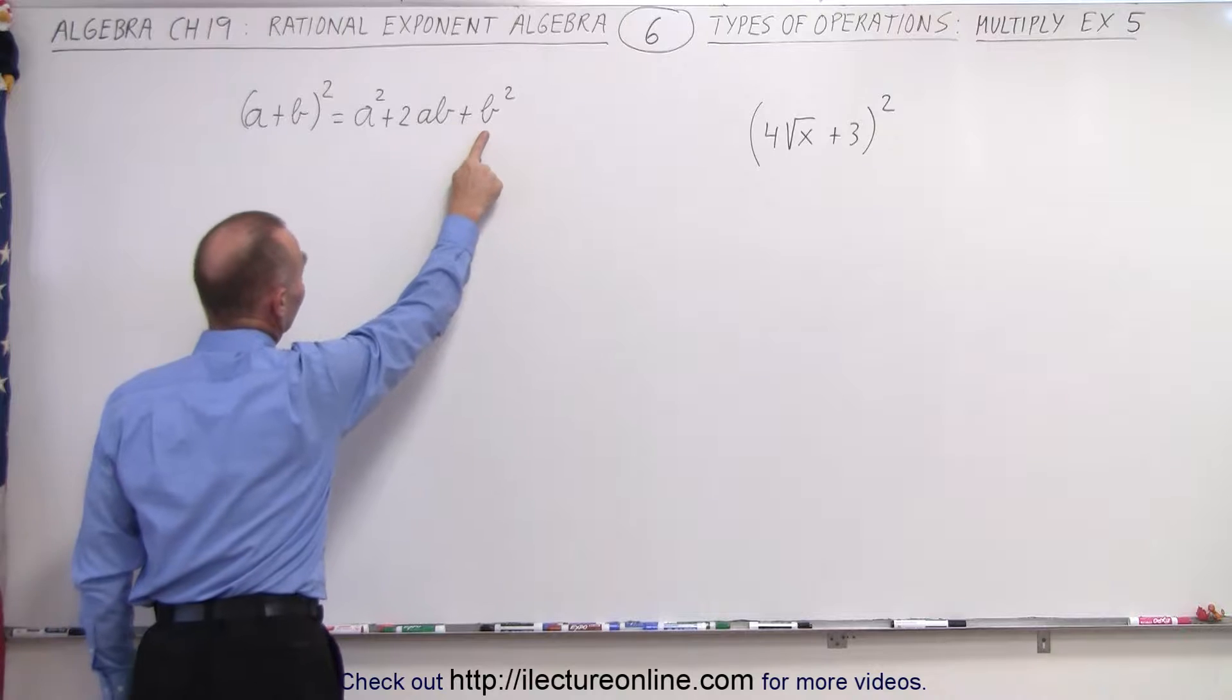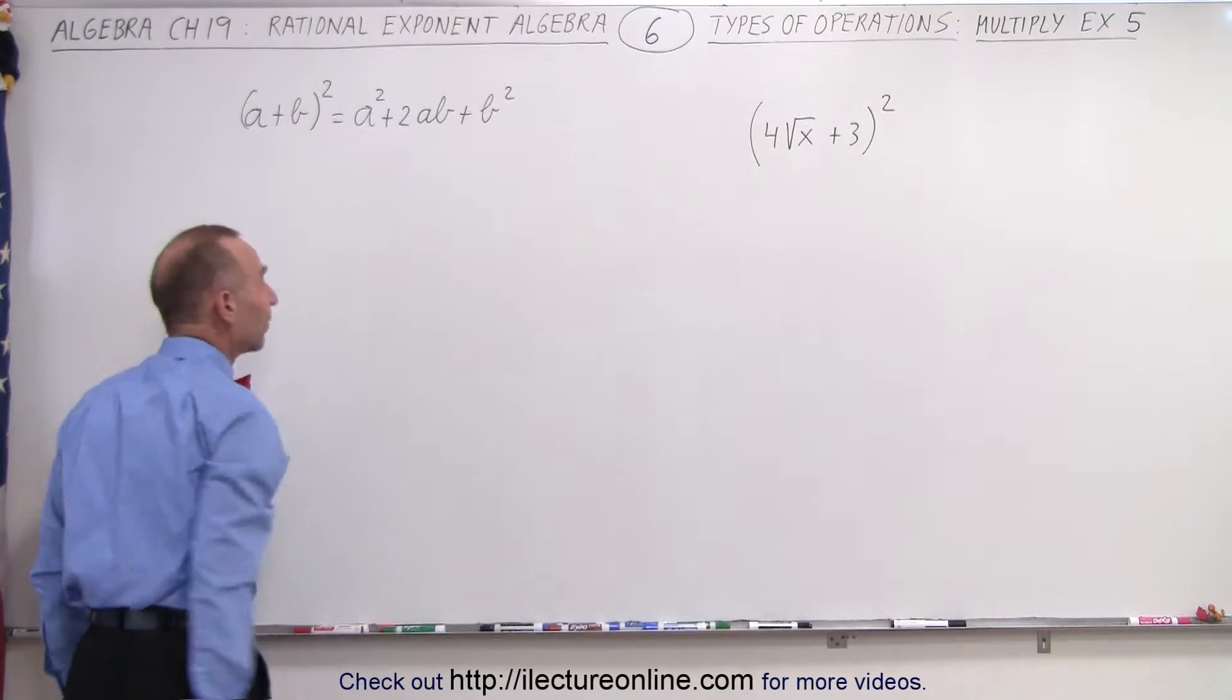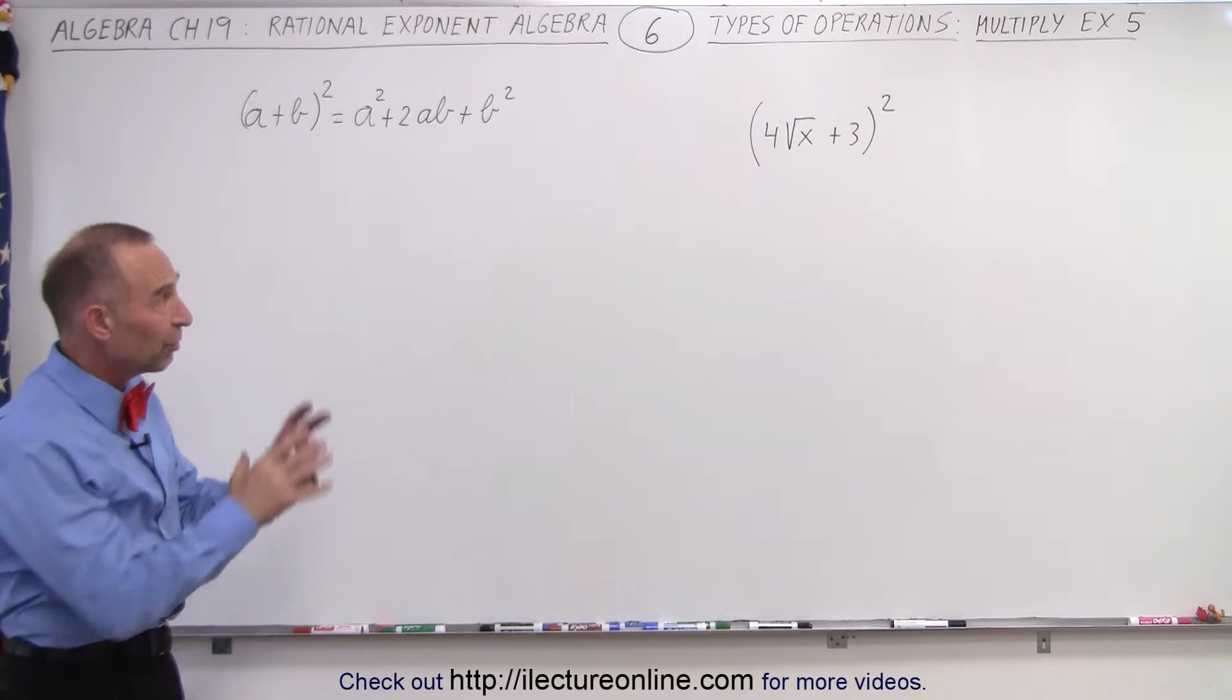the first term squared plus the last term squared plus twice the product of the two terms, a times b. So we're going to use the same principle over here.